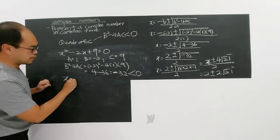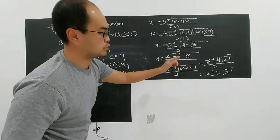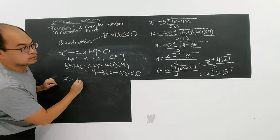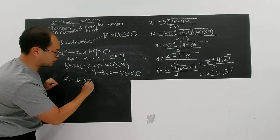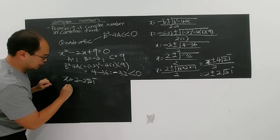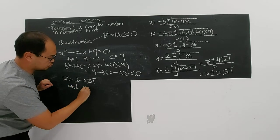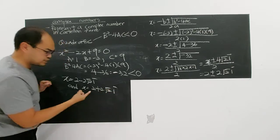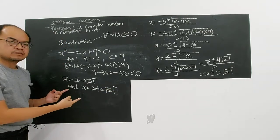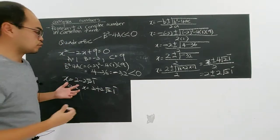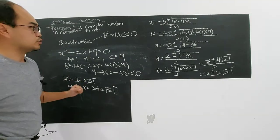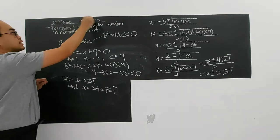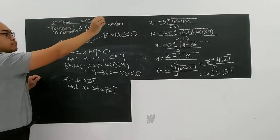In your life until now, you maybe haven't solved this type of equation which gives you this type of number. You get x = 2 - 2√2·i and x = 2 + 2√2·i. You are not surprised anymore, because you now know there is a number we call a complex number.